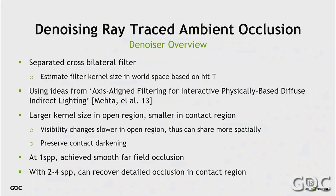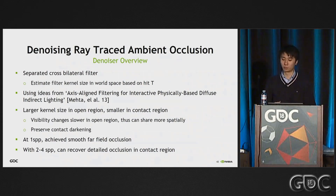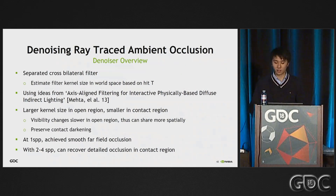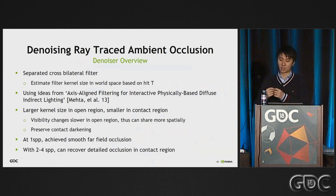Here is a high-level overview of how the filter works. Our denoiser is a cross-bilateral filter with adaptive filter footprint per pixel. The general idea is based on the existing publication called the A-trous Wavelet Filter for indirect diffuse from Mehta et al. from 2013 — a frequency space analysis paper from UC Berkeley — which basically varies the filter size based on the ray hit distance. Intuitively, visibility should change slower in open regions than in contact regions.